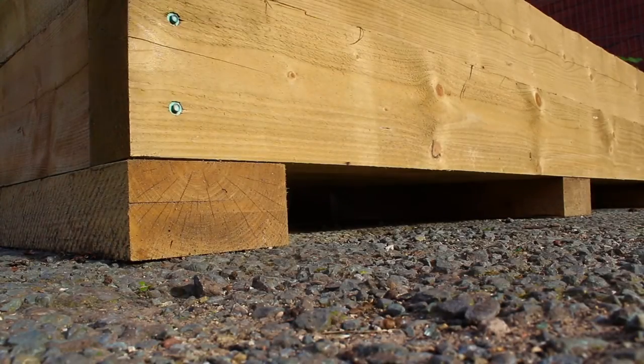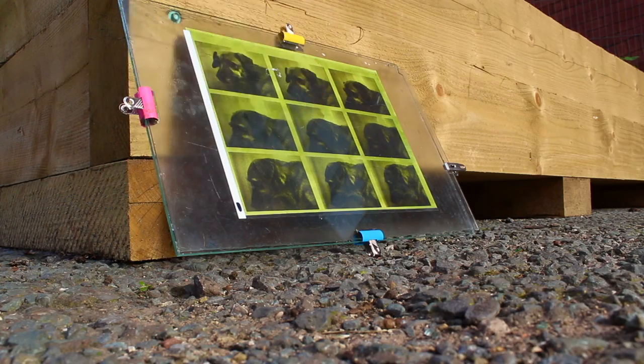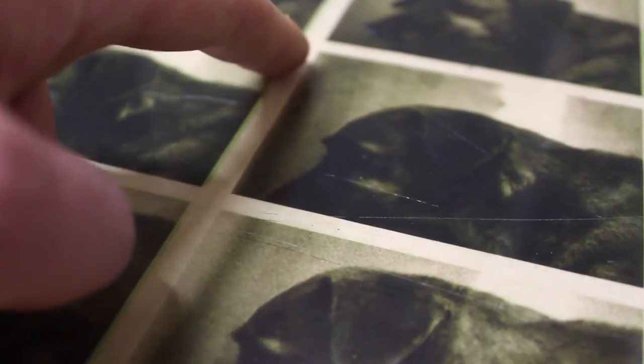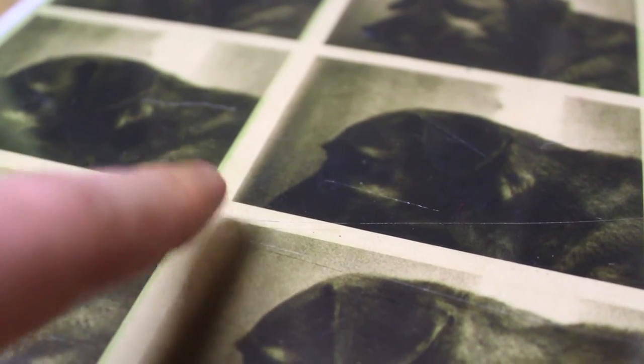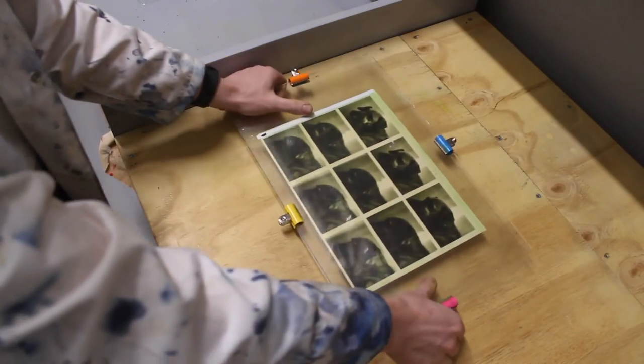Once ready, you want to take your anthotype outside and ideally leave in direct sun for a number of hours. You'll know your anthotype is ready once the exposed areas become bleached, as you can see here. Then take the anthotype back inside and prepare to take it apart.